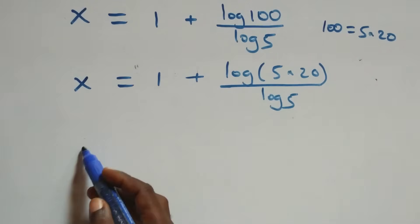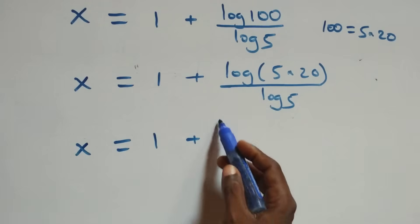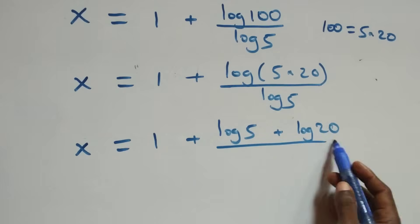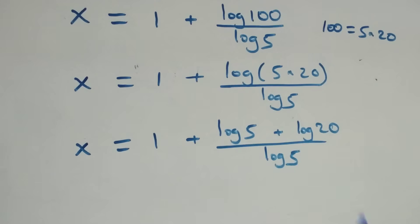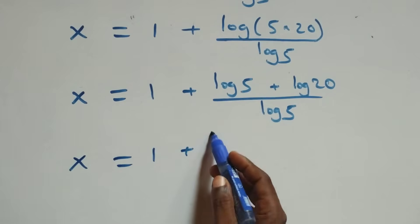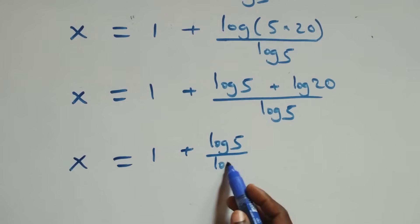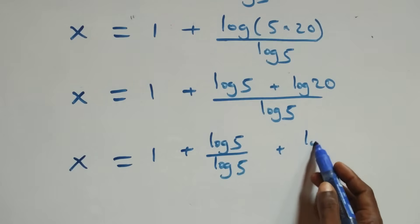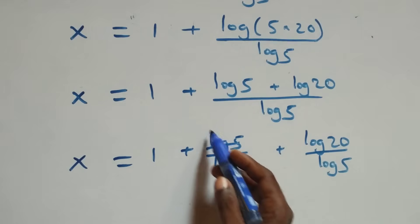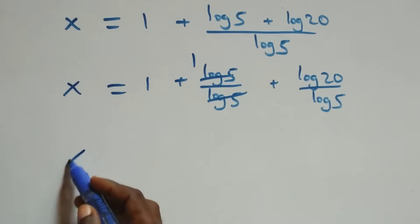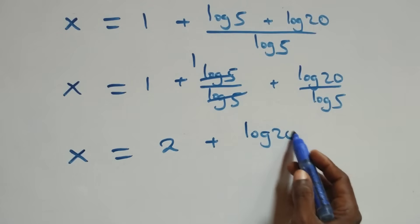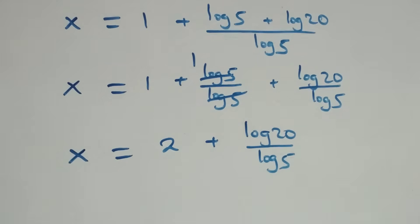This also follows the product rule of logarithms, giving x equals 1 plus log 5 plus log 20, all over log 5. We separate into two fractions: x equals 1 plus log 5 over log 5, plus log 20 over log 5. Log 5 over log 5 cancels to give 1, so x equals 1 plus 1 plus log 20 over log 5, that is 2 plus log 20 over log 5.